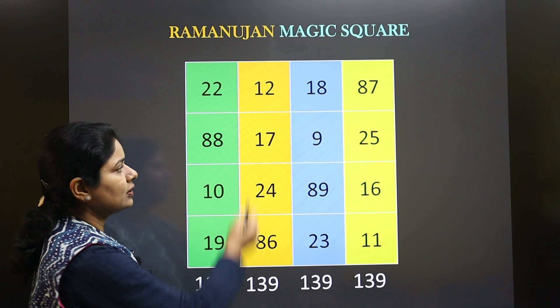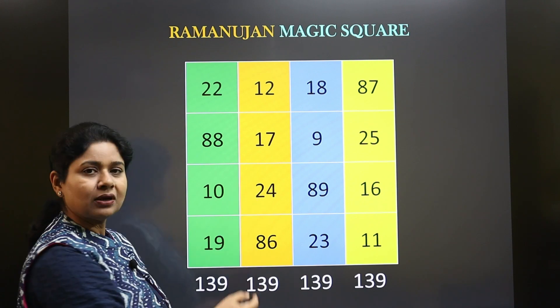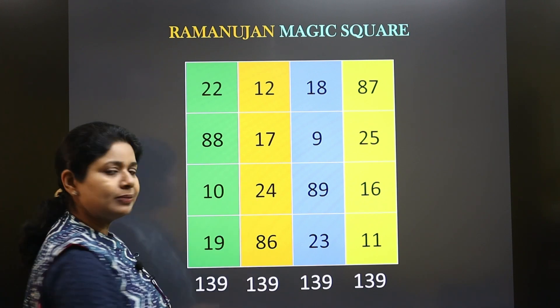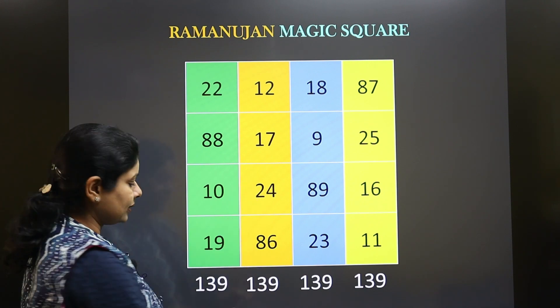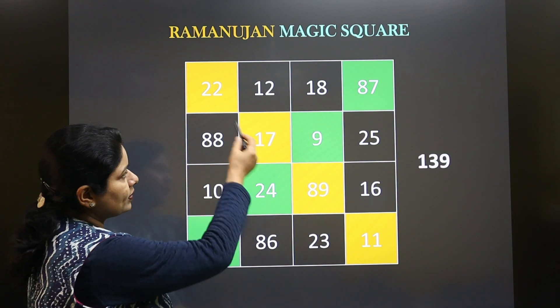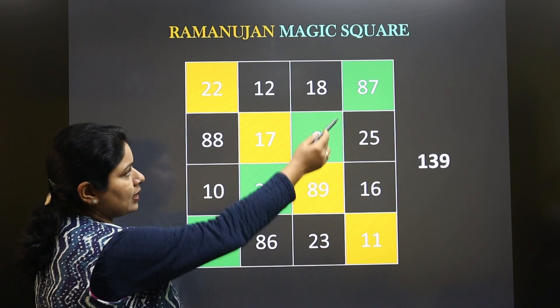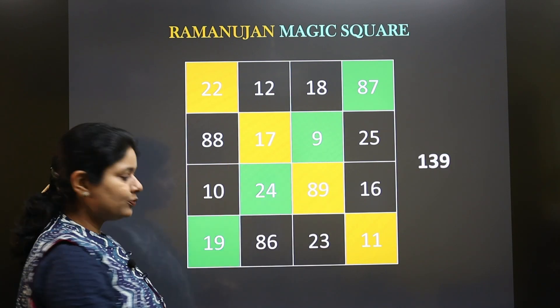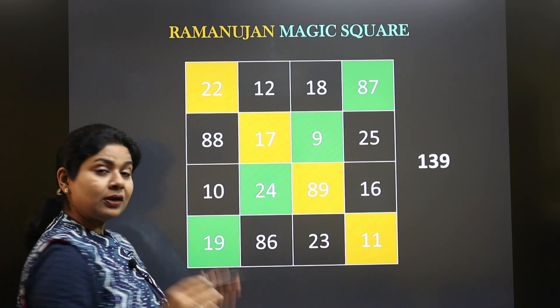Even if you add the numbers in each column, it will also be 139, and moreover the numbers in the diagonals also add up to 139.